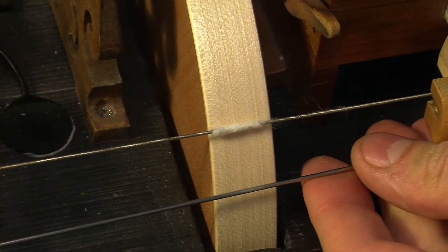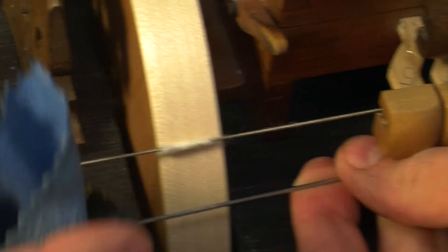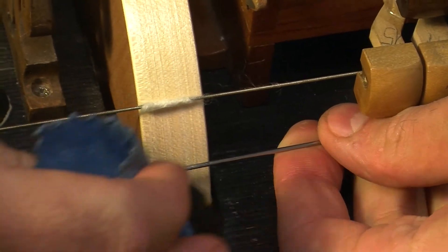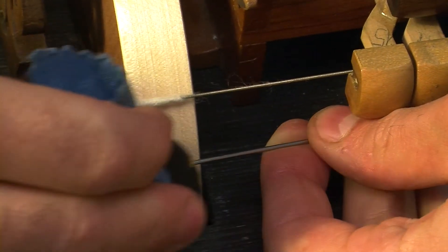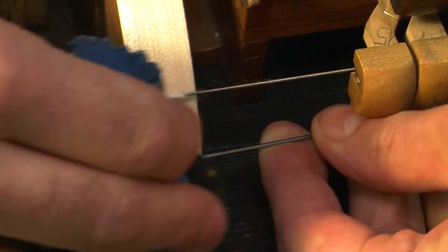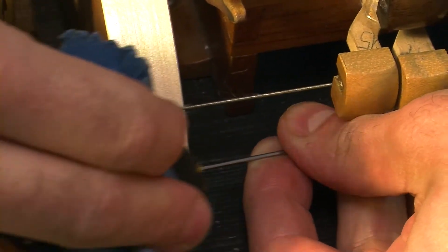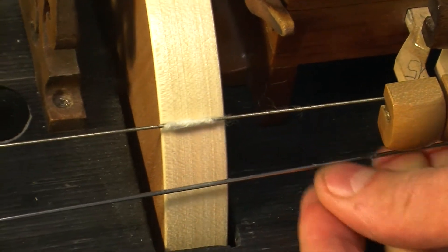We're taking our low C, applying a little bit of rosin on it, turning the string around a little bit just to ensure the rosin is applied on a wider area.